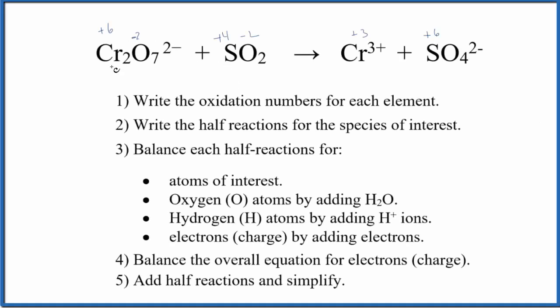Let's balance the redox reaction Cr2O7 2- plus SO2 in acidic medium. The first thing we have to do is write oxidation numbers for each element. I've done that up here. If you need help, there's a link in the description on how to do that. Once we have the oxidation numbers, we can write the half reactions for each species of interest. Species of interest, those are the things that have changed.